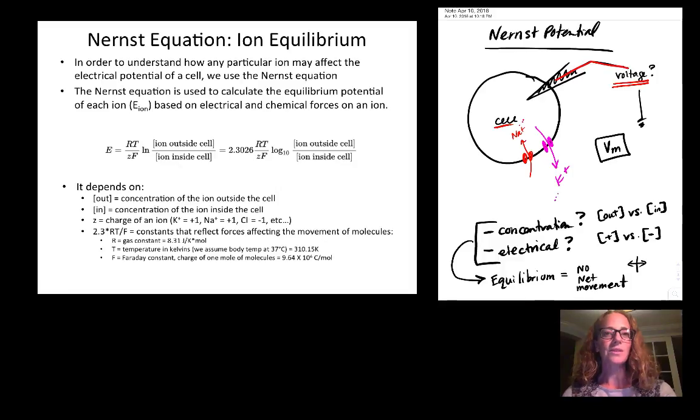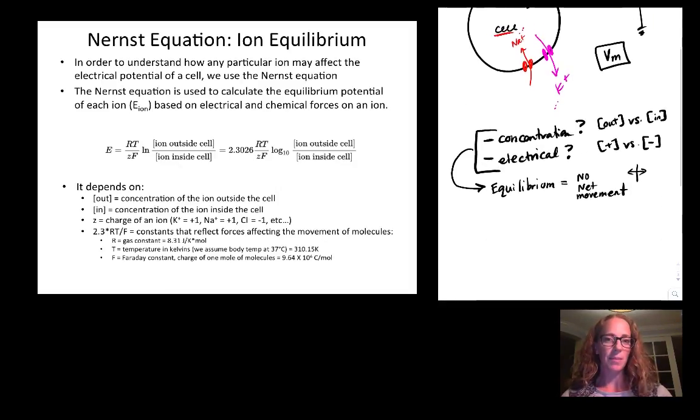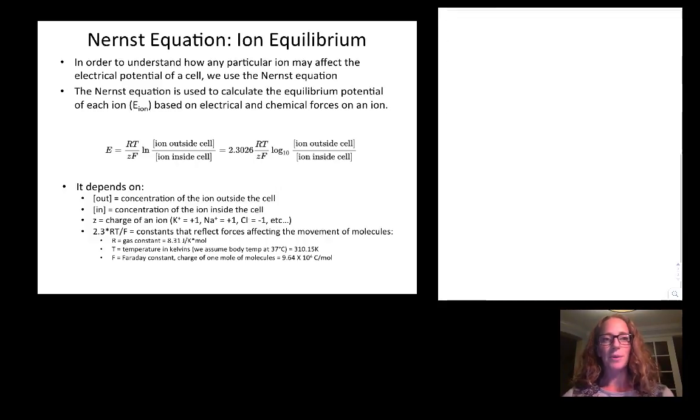So we use the Nernst equation to calculate this. If you don't already have a piece of paper, grab one or grab some notes and let's take some time to go through the Nernst equation for looking at ion equilibrium. In order to understand how any particular ion may affect the electrical potential of the cell, we use the Nernst equation. The Nernst equation is used to calculate the equilibrium potential based on electrical and chemical forces on an ion.